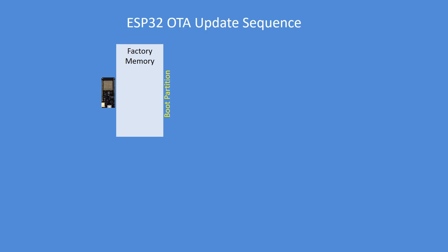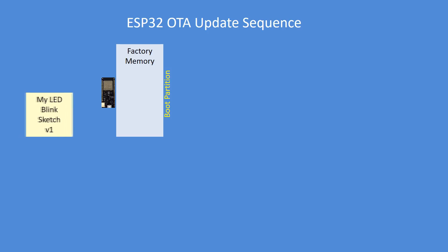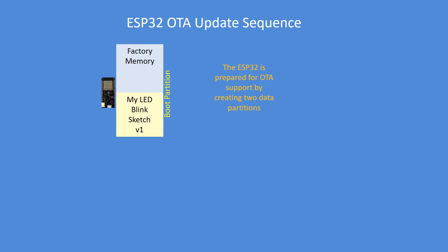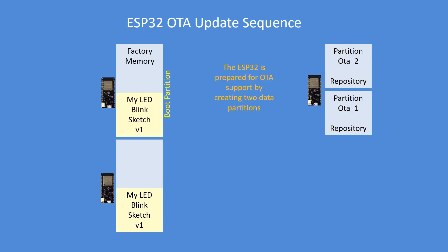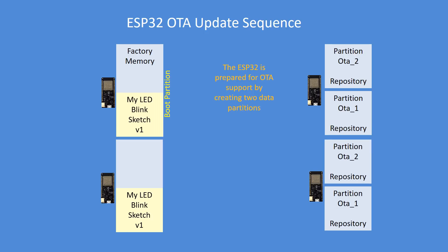To begin with, your ESP32 comes from the factory with blank memory. I've got a sketch called Blink — it blinks the LED — and I've uploaded it, and the boot partition is set to start your sketch, Blink. Now we're going to prepare the ESP32 for over-the-air updating, which means augmenting that setup code to create the two over-the-air partitions, OTA1 and OTA2. This diagram depicts the ESP32 with my Blink version 1 sketch loaded and the OTA update support added.